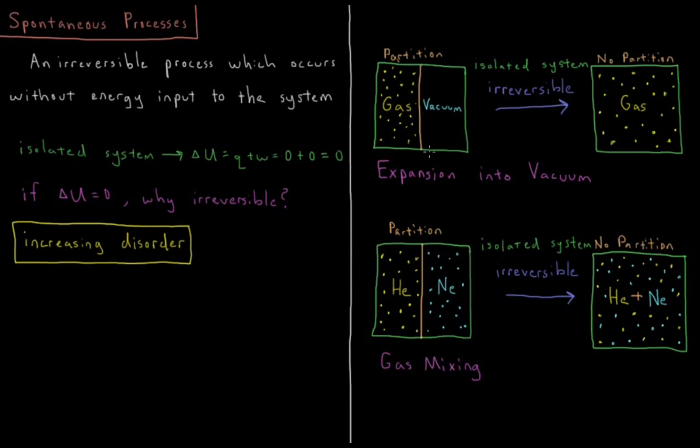Let's look at a gas which fills up half the container. Half of the container is gas, half of it is vacuum, and there's a partition which separates the gas and the vacuum. This is an isolated system, so there's no change in energy from the outside of this system. Now what happens when we remove this partition?